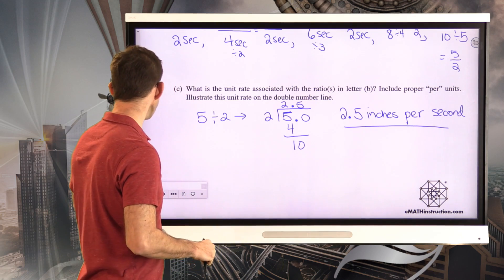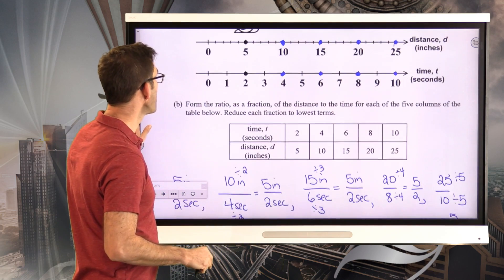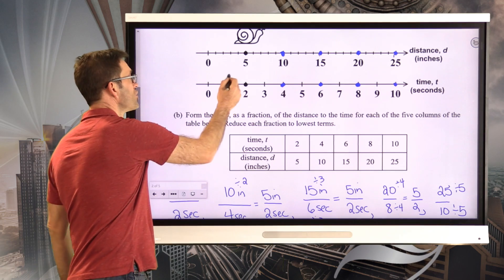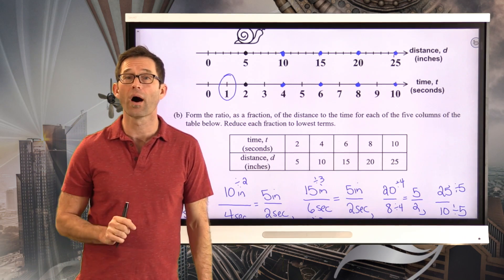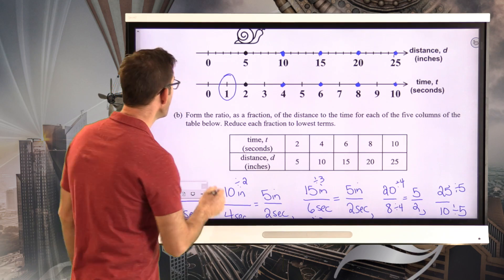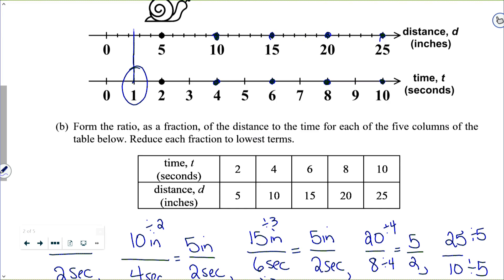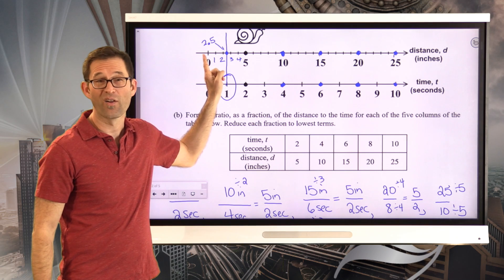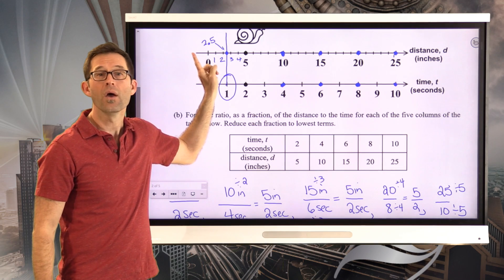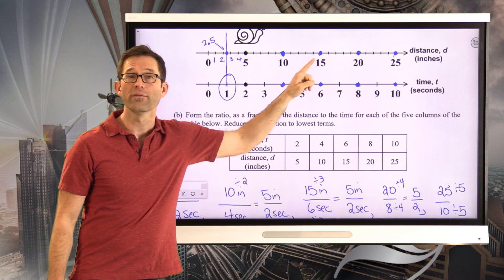Notice it also asks us to illustrate this unit rate on the double number line. Well, we can actually do that quite easily. Because when we come up to the double number line, if we come over to one second, and remember, our answer was 2.5 inches per second, then what we can see is if we go vertically from that, we end up being here at 2.5. So after one second, we've traveled, or the snail, unless we're on the snail's back, the snail has traveled 2.5 inches.